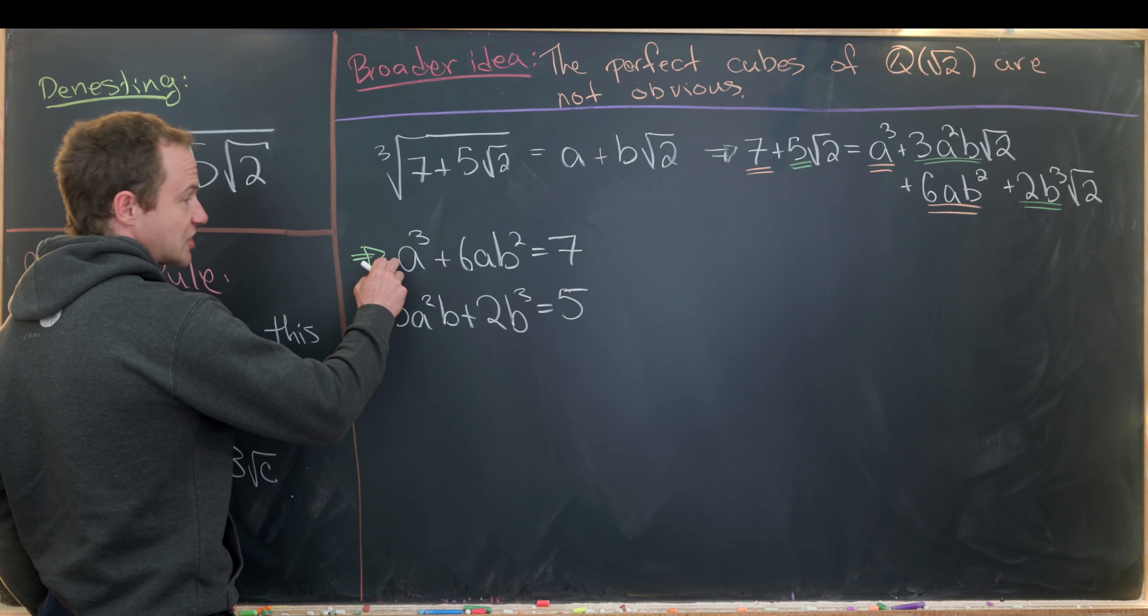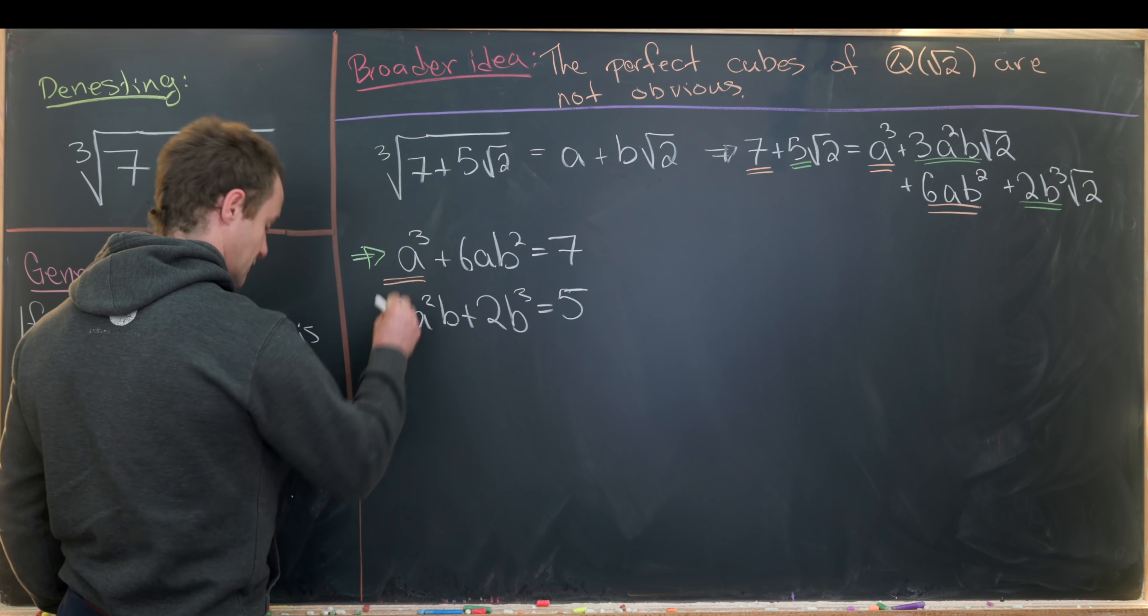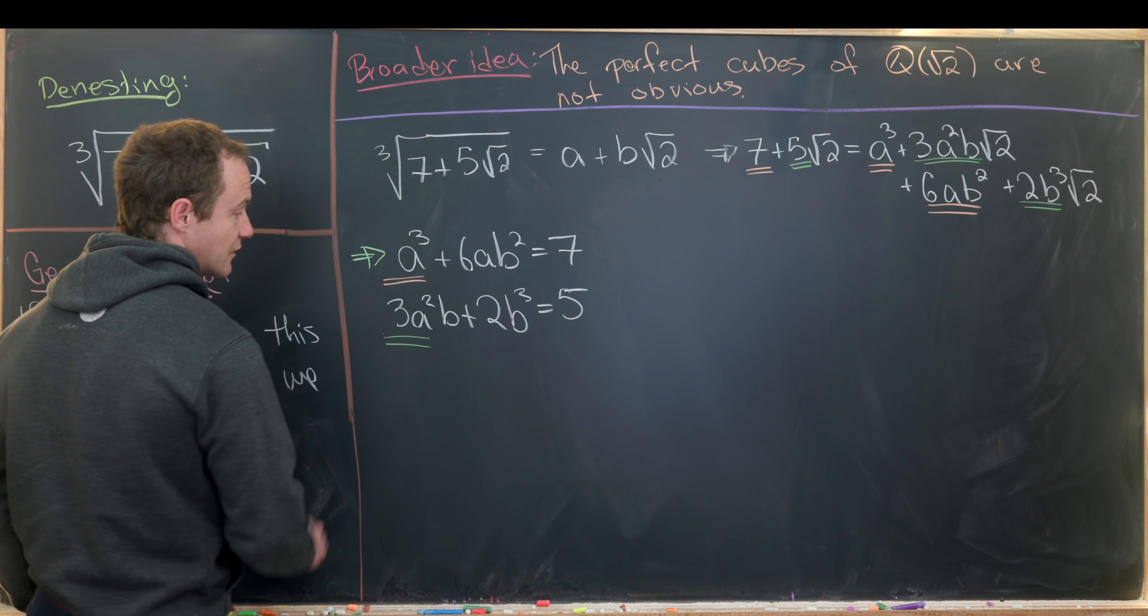So this is from the peach colored equation right here. So let's maybe note that. That's this one and then this is from the green colored equation over there.